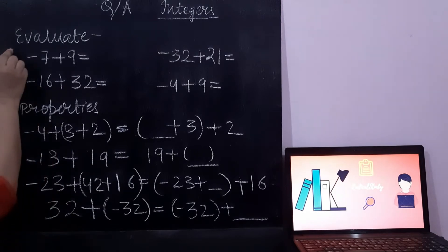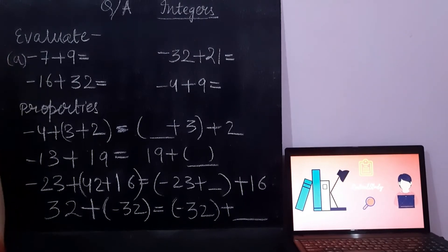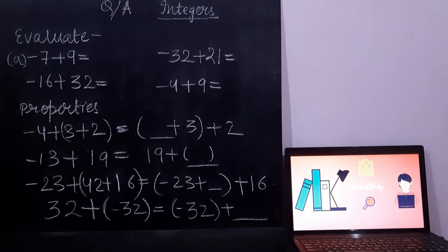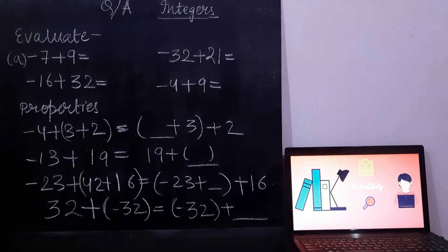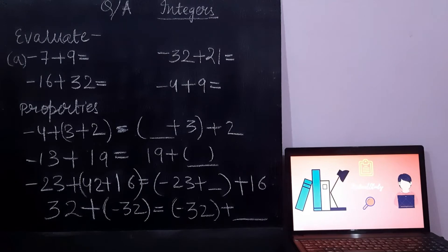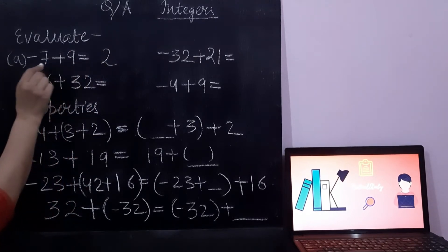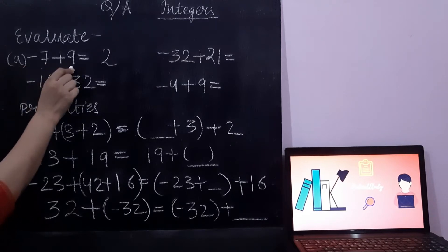So the first option, that is option A. Please tell me: minus 7 plus 9. The answer is 2. Why is it 2? Because 9 is greater than 7, so we are using the positive sign.